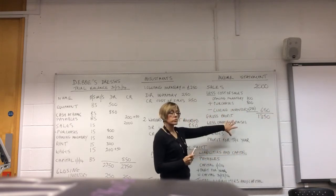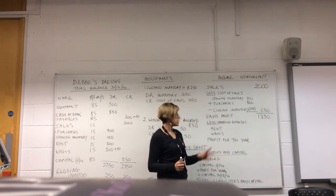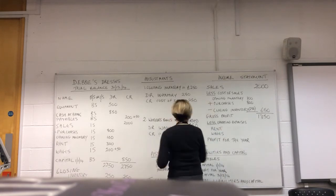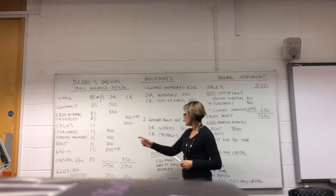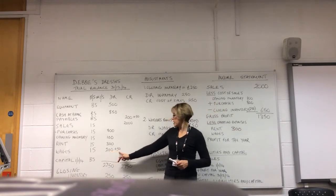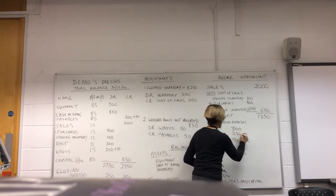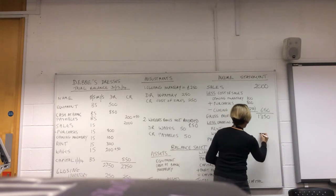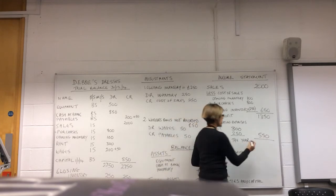And we can now deduct from our gross profit our operating expenses. That's rent, which we get straight from our trial balance — £300 — and wages, which is the trial balance figure plus the adjustment — £250. So we're going to deduct £550 of operating expenses. And that gives us our profit for the year of £800.